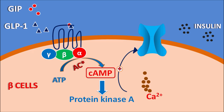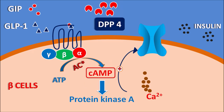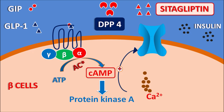The action of these incretins is controlled by the DPP-4 enzyme, which cleaves and inactivates them, resulting in decreased insulin release. Cetagliptin selectively binds to and inhibits DPP-4, thereby preserving incretin activity, promoting more insulin secretion, and achieving better glycemic control. DPP-4 inhibitors can be given as monotherapy or combined with other drugs for greater glycemic control.